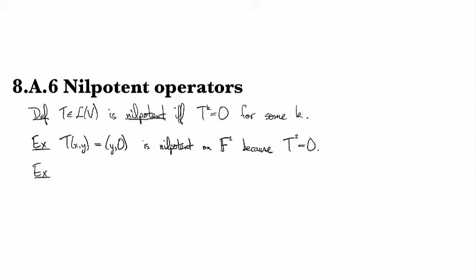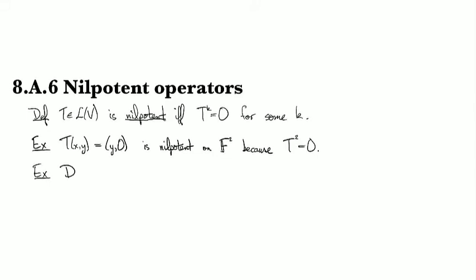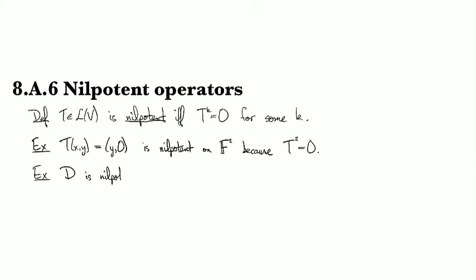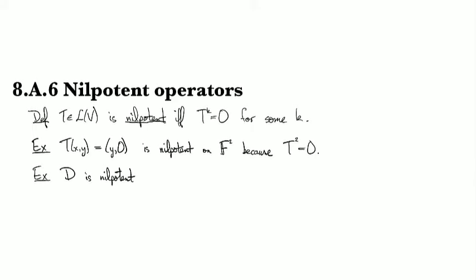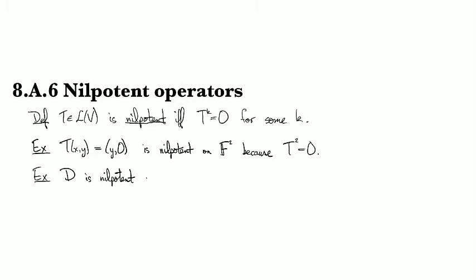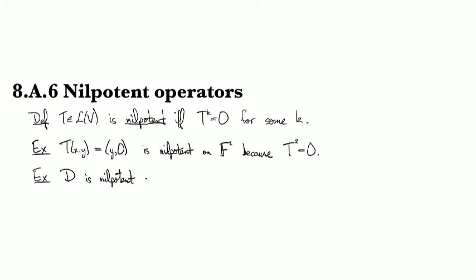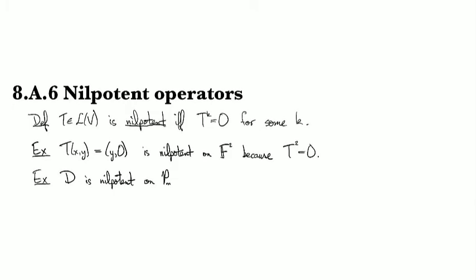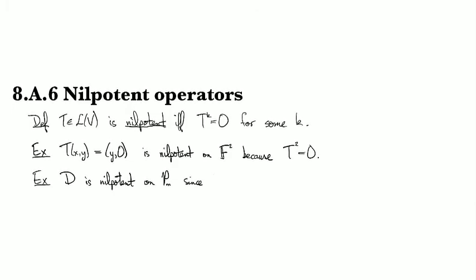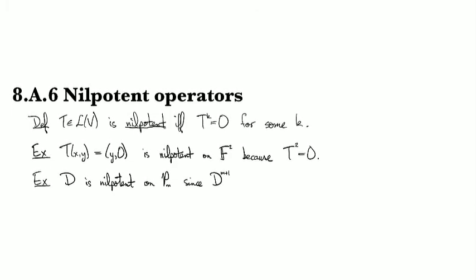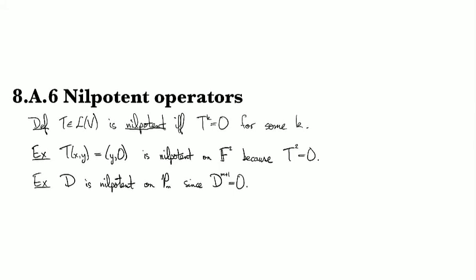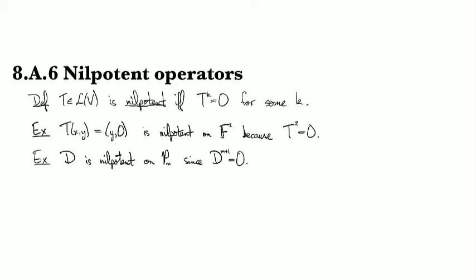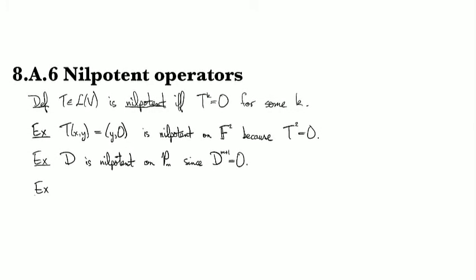Another nilpotent operator you've been familiar with for a long time is the derivative. If you're applying it to polynomials, so D is nilpotent on the polynomials of degree M or less. Since if you apply it M plus one times, that'll be enough to kill any polynomial of degree M or less.